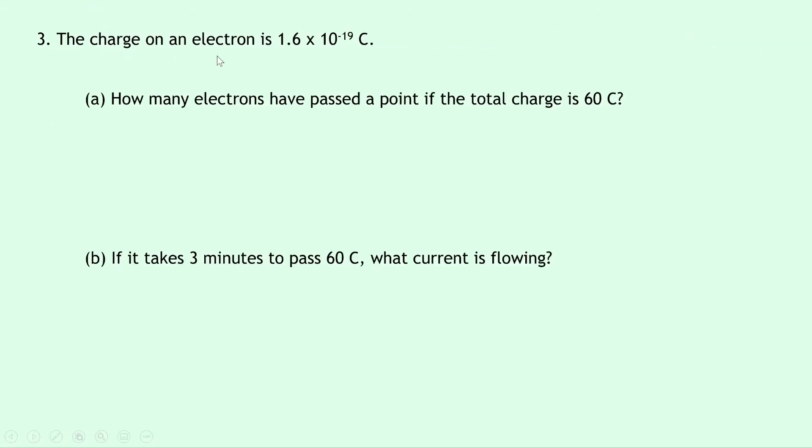Lastly question three says that the charge on an electron is 1.6 times 10 to the minus 19 coulombs. Part a says how many electrons have passed a point if the total charge is 60 coulombs.